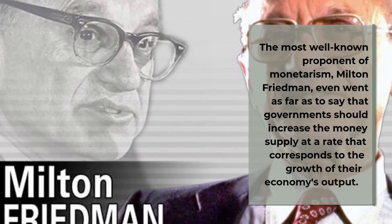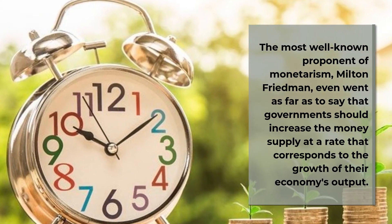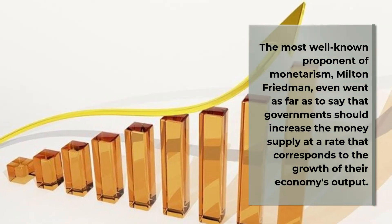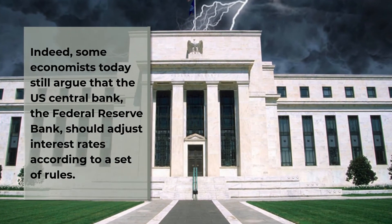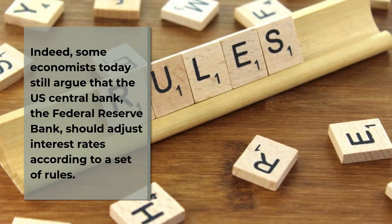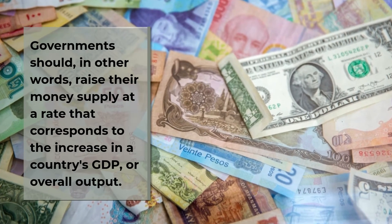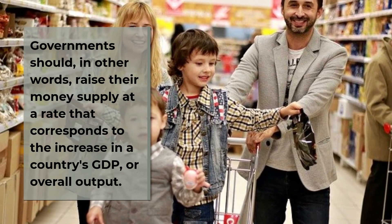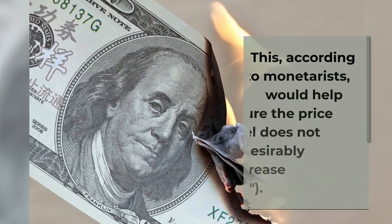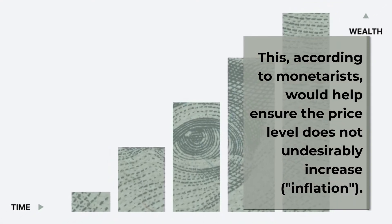The most well-known proponent of monetarism, Milton Friedman, even went as far as to say that governments should increase the money supply at a rate that corresponds to the growth of their economy's output. Indeed, some economists today still argue that the U.S. Central Bank, the Federal Reserve Bank, should adjust interest rates according to a set of rules. Governments should raise their money supply at a rate that corresponds to the increase in a country's GDP, or overall output. This, according to monetarists, would help ensure the price level does not undesirably increase — that is, inflation.